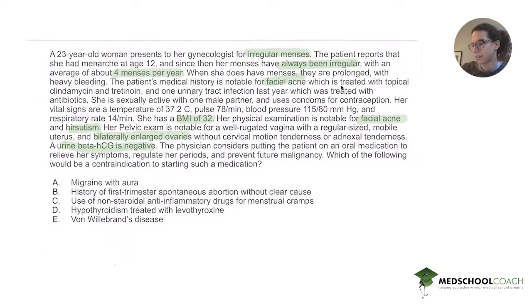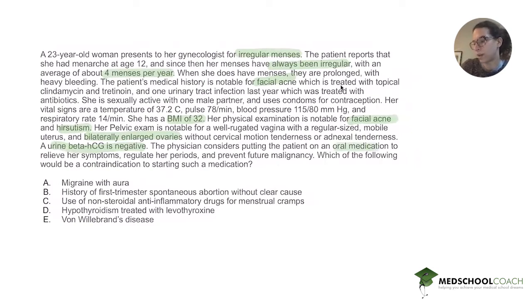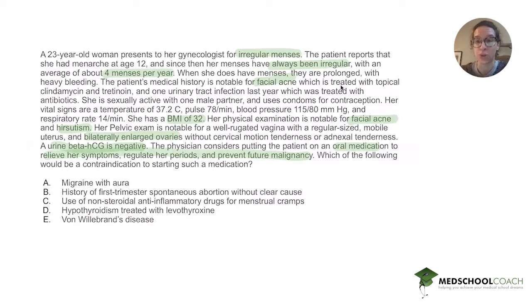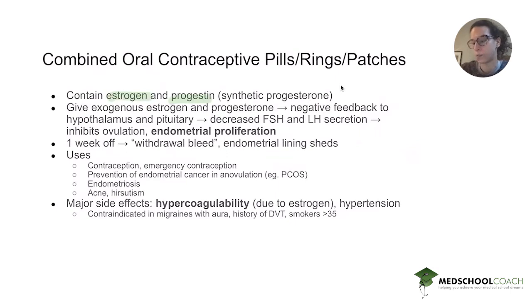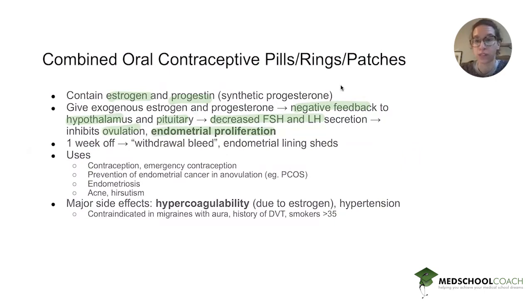So we've figured out what this woman has and that the oral medication to relieve her symptoms, regulate her periods, and prevent future malignancy is combined oral contraceptive pills for polycystic ovarian syndrome. Combined oral contraceptives contain estrogen and progestin, a synthetic progesterone. They provide negative feedback to the hypothalamus and pituitary, decreasing FSH and LH, which inhibits ovulation and endometrial proliferation. This is why we want to put this woman on them — she's not ovulating to begin with, but we want to stop that endometrial proliferation.